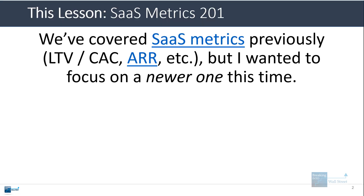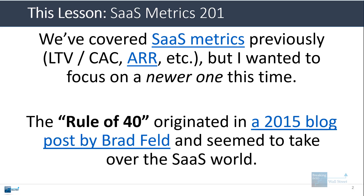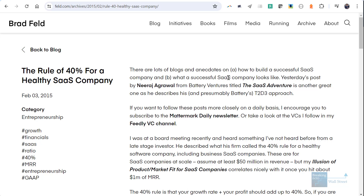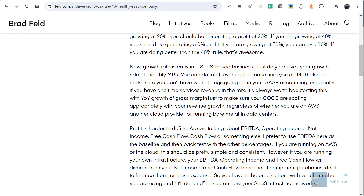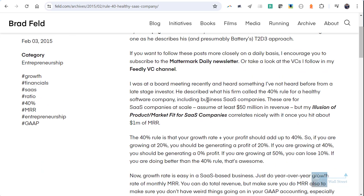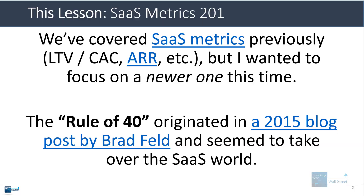We've covered a lot of SaaS metrics previously. I've linked to some of the videos here and I'll put them down below the video in the first pinned comment as well, but I want to focus on a slightly newer human-created metric this time, which is the rule of 40. As far as I can tell, it came about starting in a 2015 blog post from Brad Feld. I've pulled up the post right here and right after he published it, this idea seemed to take over the entire SaaS world.